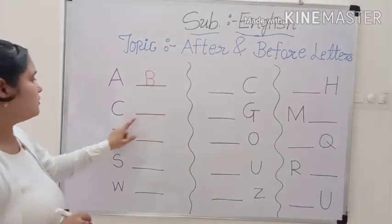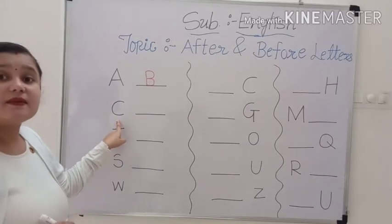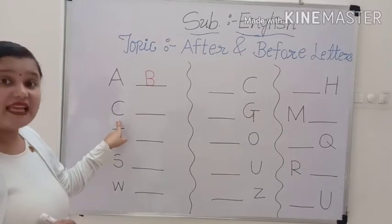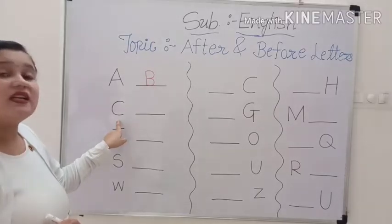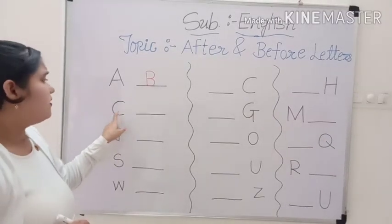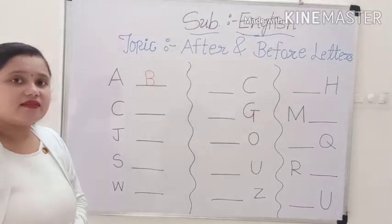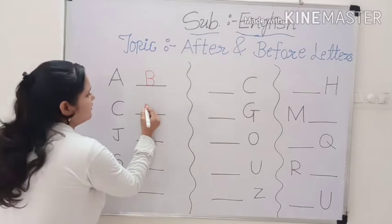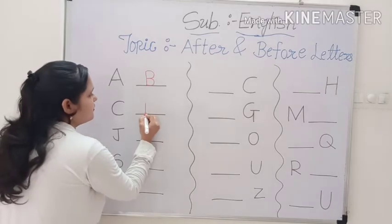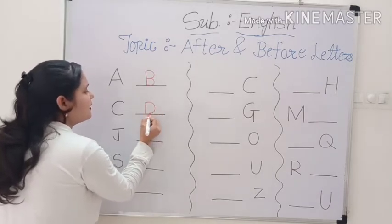Now, which letter is this? C. This is letter C. And which letter comes after C? D. Very good. Capital D.